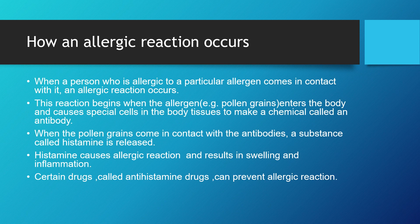How does an allergic reaction occur? When a person is allergic to a particular allergen and comes in contact with it, an allergic reaction occurs. This reaction begins when the allergen contacts the person's body — for example, pollen grain. Not all people are allergic to pollen grain. The person who is allergic to it will have an allergic reaction because they are hypersensitive, and their sensitivity reacts against the pollen grain.